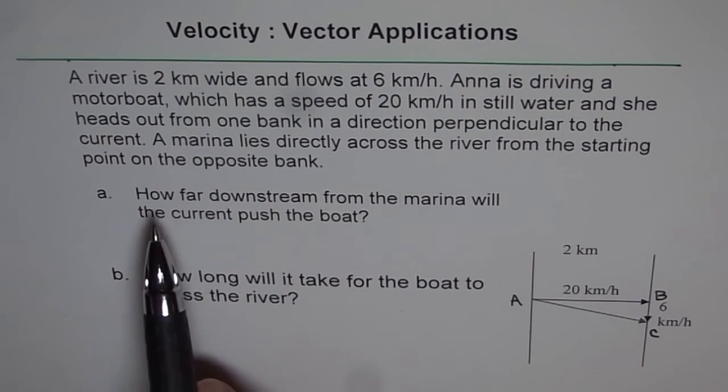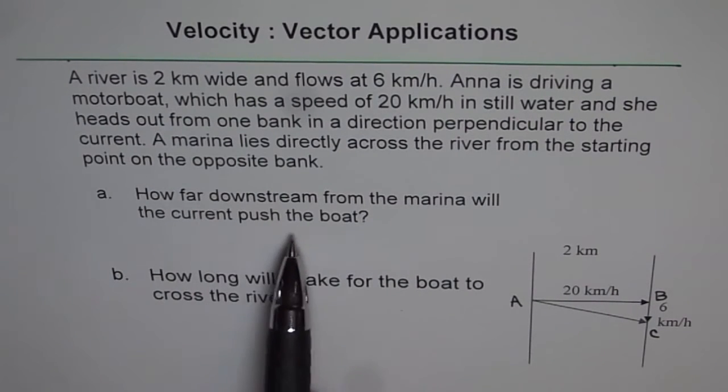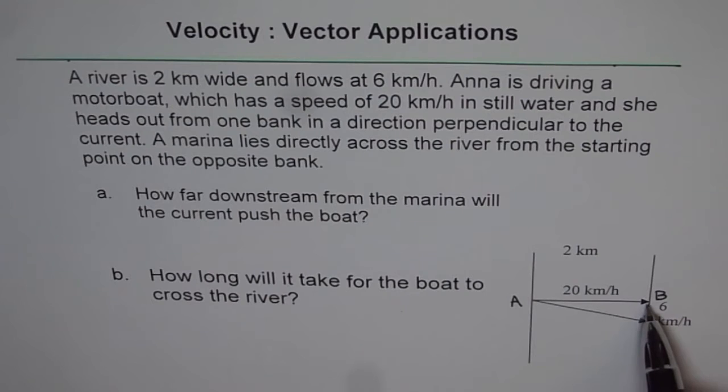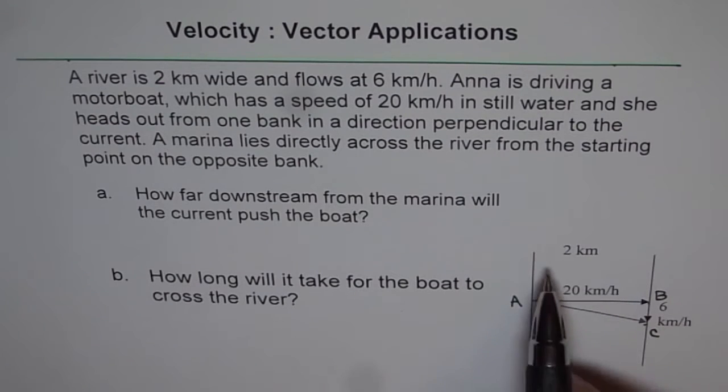So the question is, how far downstream from the marina will the current push the boat? That means we need to find this distance. So the idea here is to find out the distance between B to C. To find that out, we see that velocities and distance will make similar triangles.